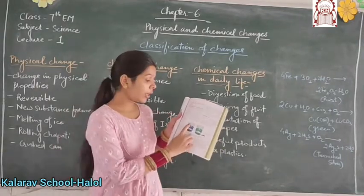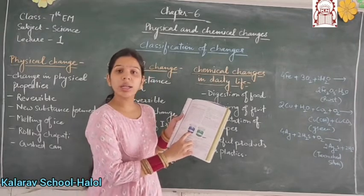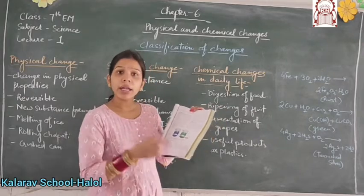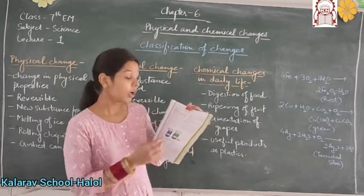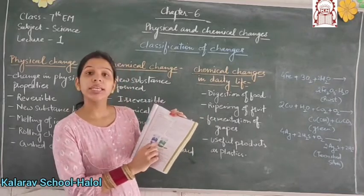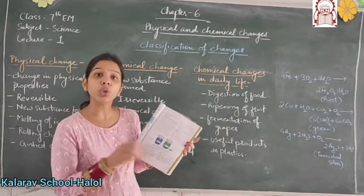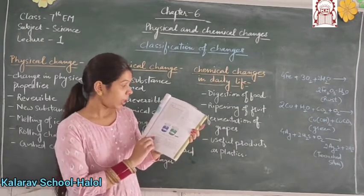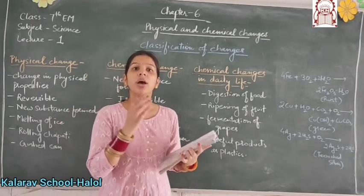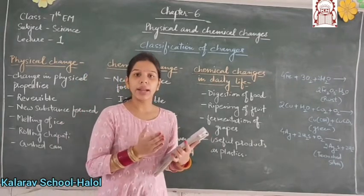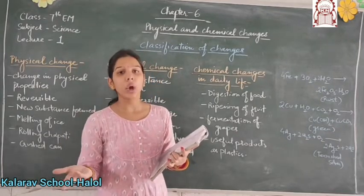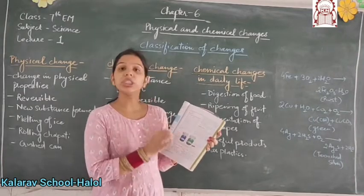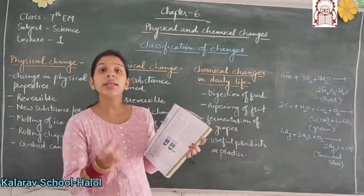In the next activity, in the beaker, the blue color substance is called copper sulfate. When I add an iron blade into it, the copper sulfate solution changes color to green. This green color is due to the formation of a new substance called iron sulfate. This is a chemical change — the reaction of copper sulfate with iron gives iron sulfate and copper.